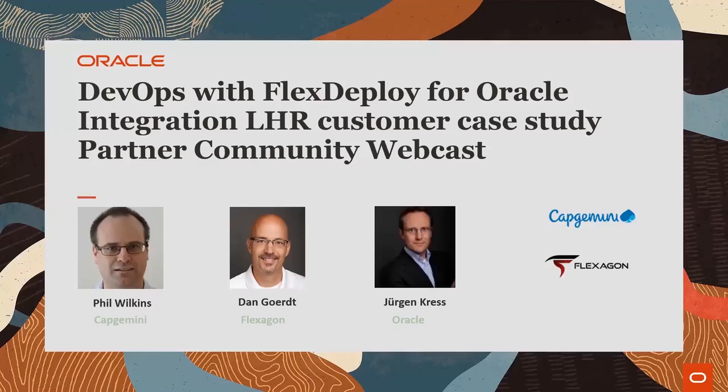Phil Wilkins is a Senior Consultant and Technology Evangelist for Capgemini UK. As an ACE Director, he has published several Integration and API books. When asked which is most important, Phil noted the first one on Integration Cloud.